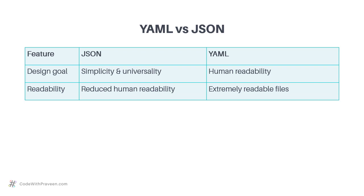When it comes to readability, JSON has lesser readability compared to YAML. When it comes to YAML, it is extremely readable. As you saw in the previous example, as well as in forthcoming lessons, you'll notice that YAML files and structures are extremely readable.